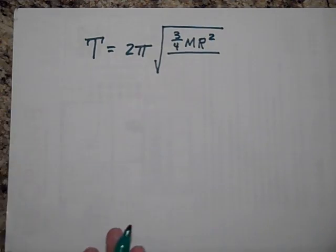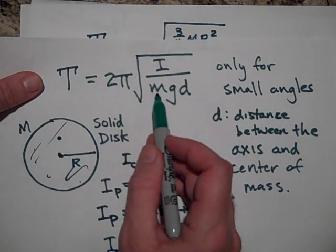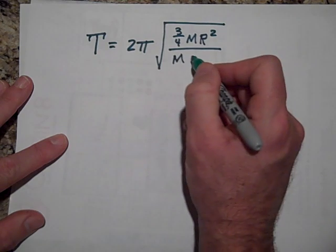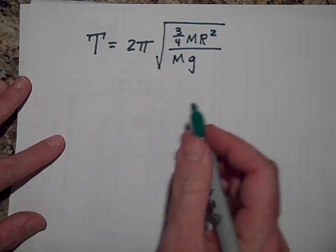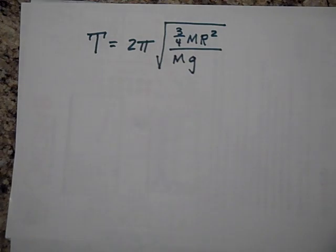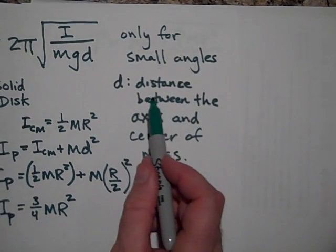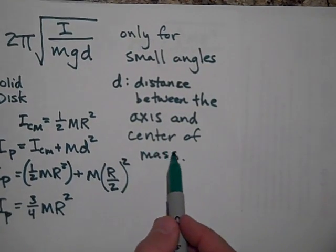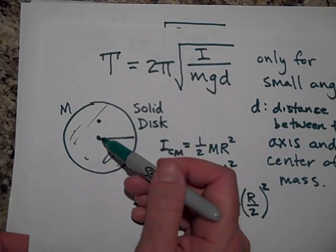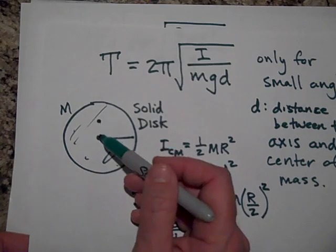Divide it by, and then our equation tells us what you do is you take, you divide that by MGD. So that would be the mass of the thing, times G, times D. Now, D is the distance between the axis, D is the distance between the axis and the center of mass. So I'm thinking that that is, here's the axis and here's the center of mass. So D is R over 2 again.